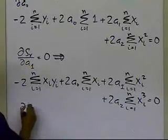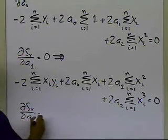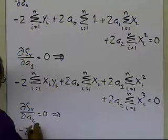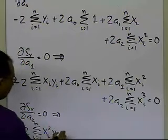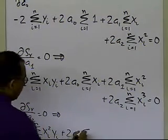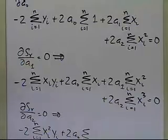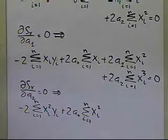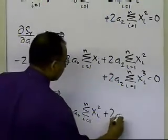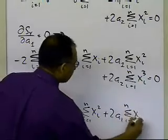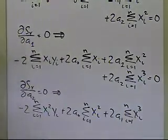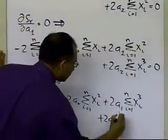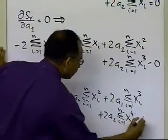And the third equation, which was del Sr by del a2 equal to 0, will give me minus 2 summation i equals 1 to n of xi squared times yi, plus 2 a0 summation i equals 1 to n of xi squared, plus 2 a1 summation i equals 1 to n of xi cubed, plus 2 a2 summation i equals 1 to n of xi raised to the power of 4, equal to 0.